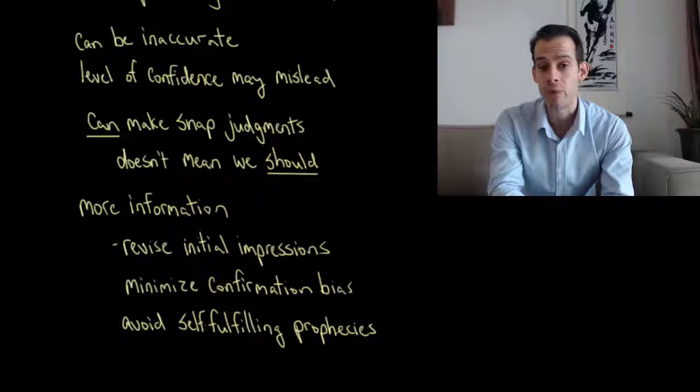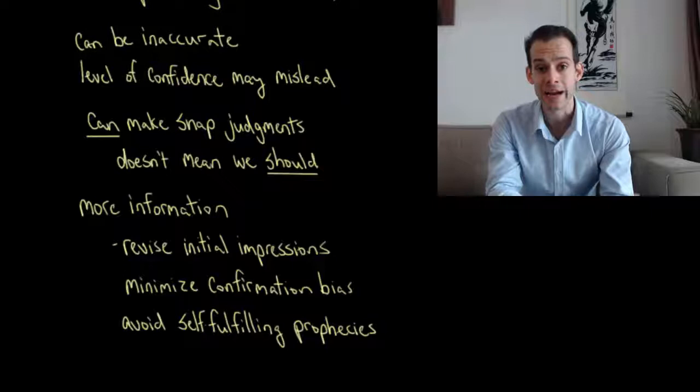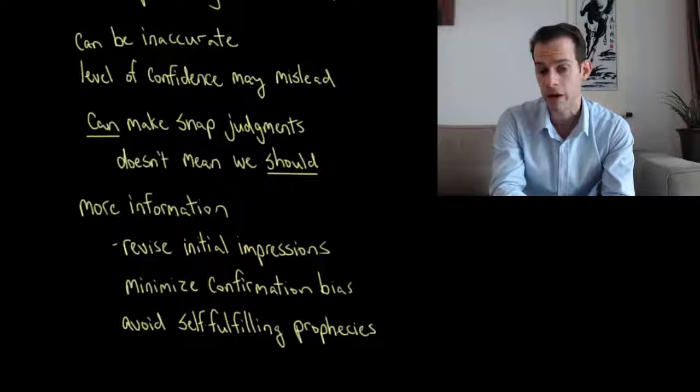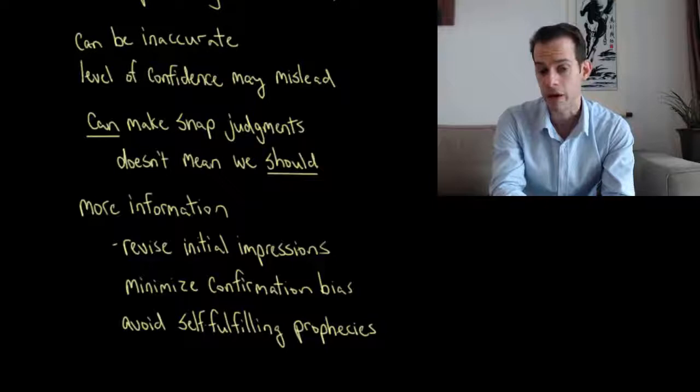So one problem that we have is if we believe a person to be a certain way we might change our behavior towards that person and that might actually bring out some of the characteristics that we're looking for. That would be a self-fulfilling prophecy. So if I believe that somebody is rude and then I always treat them in a rather curt manner, they might in turn be rude back to me and that would become a self-fulfilling prophecy. So if I recognize that maybe my initial impression is wrong and maybe I've been misled, then maybe I can avoid causing this self-fulfilling prophecy.